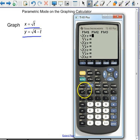So I'm going to do the square root of t for x. And I'm going to do the square root of 4 minus t for y.